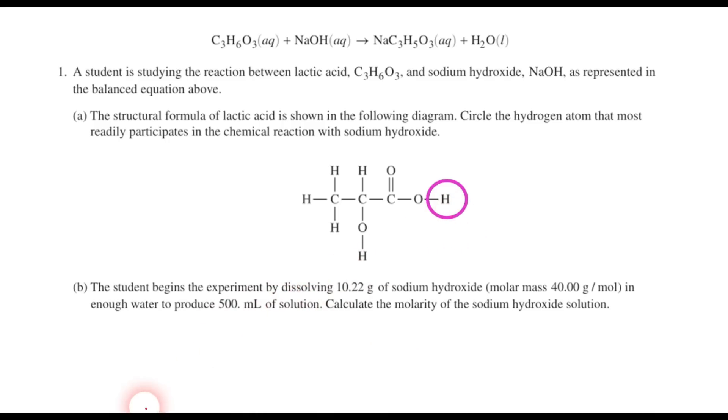Let's take a look at Part B here. It says the student begins the experiment by dissolving 10.22 grams of sodium hydroxide in enough water to produce 500 milliliters of solution. Calculate the molarity of the sodium hydroxide solution. Well, we start by realizing that we have 10.22 grams of sodium hydroxide, and we have to convert that to moles. So in our conversion factor, we'll put grams on the bottom and one mole on top, and it does tell us that the molar mass of this is about 40.00 grams per mole.